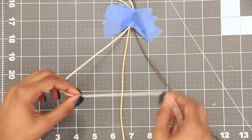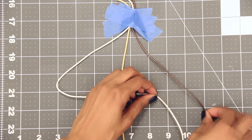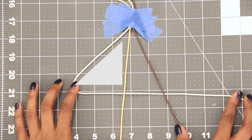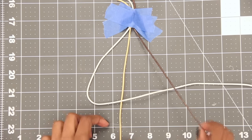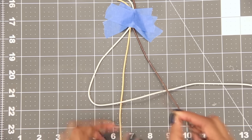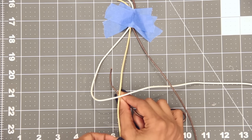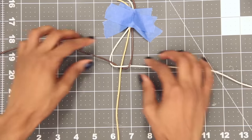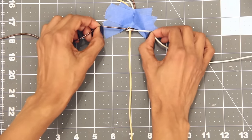Start by crossing the left strand over the middle and under the right. This triangle will be very important in the next step. Now take the right strand and bring it under the middle and up through this triangle. Then just tighten it up by pulling on the left and right strands at the same time. This is one half of your square knot.